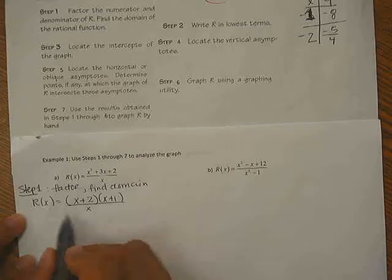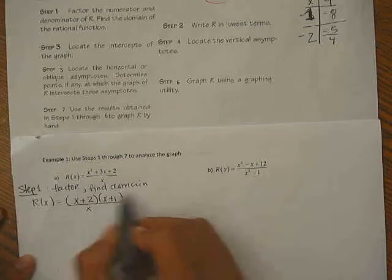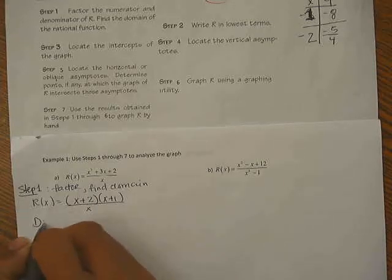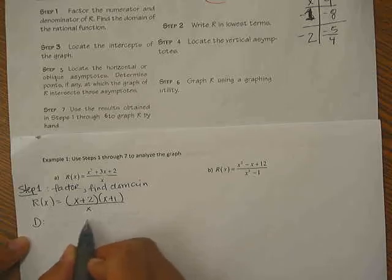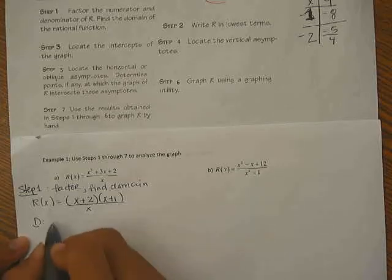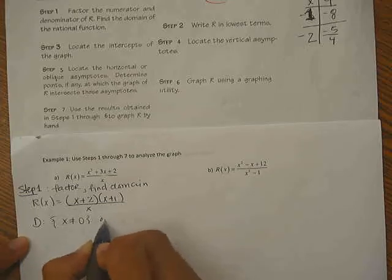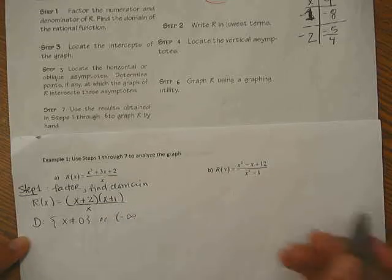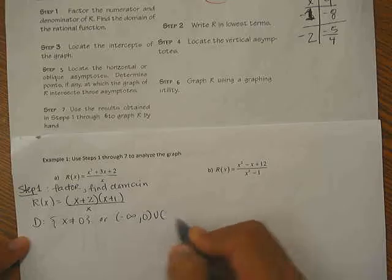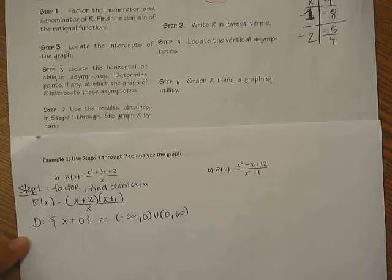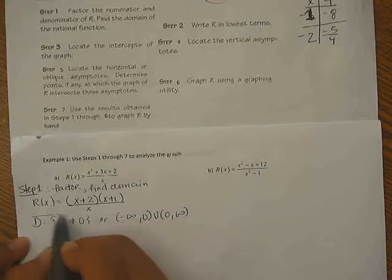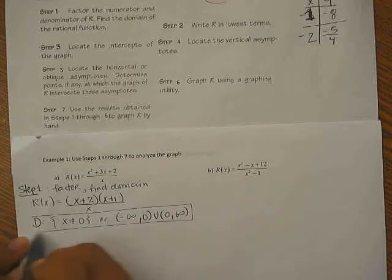So it says factor numerator, factor denominator, and then it says find the domain. The domain is where your denominator cannot be 0, so I need to exclude x can never ever be 0. Or you can write interval notation: negative infinity to 0 union 0 to positive infinity. So either one will be just fine. I'm going to box these up because these are my final answers.